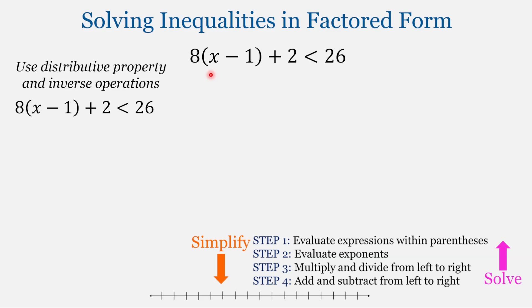In this first inequality, we have 8 times the quantity x minus 1, plus 2, is less than 26. We're going to solve this inequality in two ways.